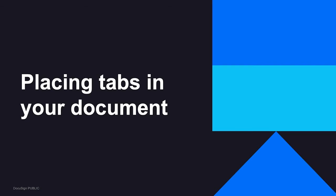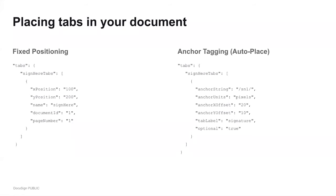Another really important thing with tabs is positioning them in your document. There are two options. The first is fixed positioning, also known as absolute positioning, which places a tab at a fixed location using the X position and Y position tab properties — those are measured in points, with about 3.5 points per millimeter. You also specify the document ID and page number where you want the tab to appear. If you switch out the document but keep the same document ID, the tab will always appear in the same place.